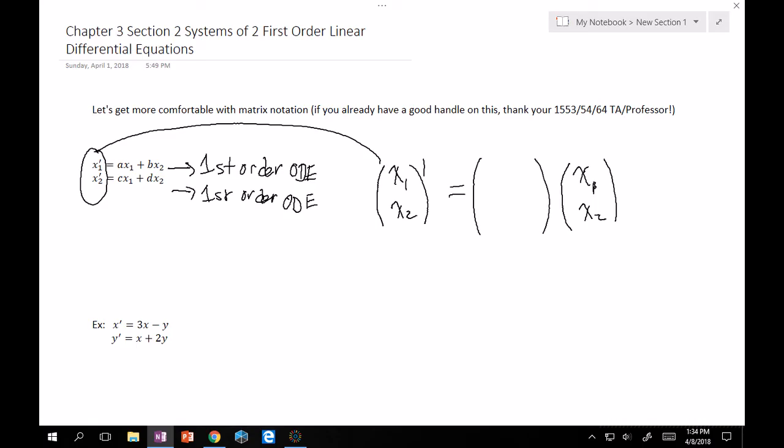And now we have to fill something in here. We want to multiply some matrix on a 2 by 1 in order to get a 2 by 1. So this matrix here must be 2 by 2, okay? And we can actually just pull off the coefficients. So A, B, C, and D.